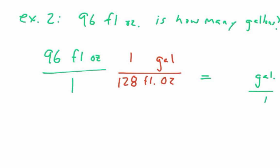Do our units cancel? Yes. So we have fluid ounces there, fluid ounces there. Now we're just left with gallons, and gallons in the numerator. So now my fraction becomes 96 times 1, so 96 over 1 times 128.